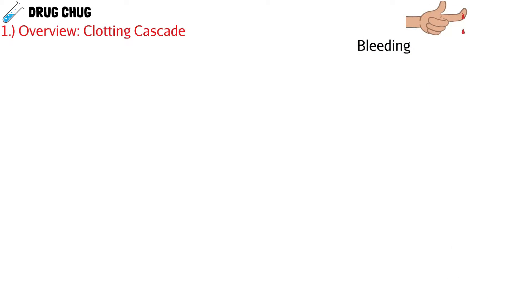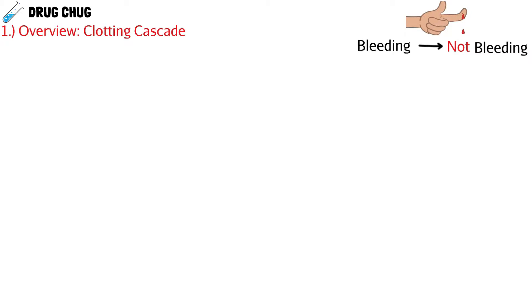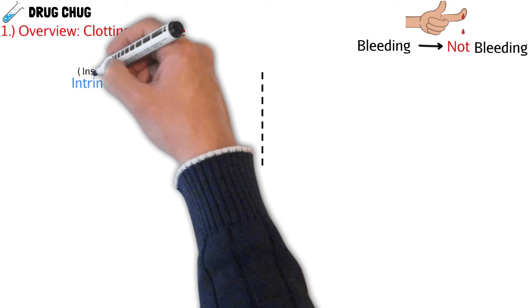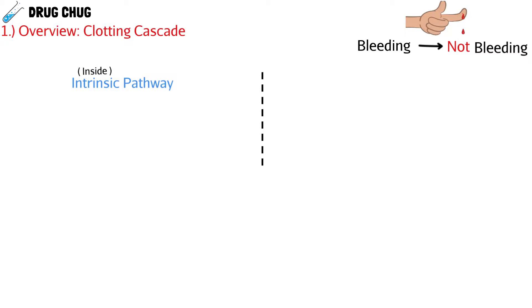To first understand how warfarin works, we need to talk about the clotting cascade. This is when you have a cut and you're bleeding — you need a way for your body to stop the bleed, and we do this through clotting. The normal clotting cascade in our body can be broken down into two sections: the intrinsic pathway, meaning the inside pathway, and the extrinsic pathway, meaning the damage is coming from the outside.